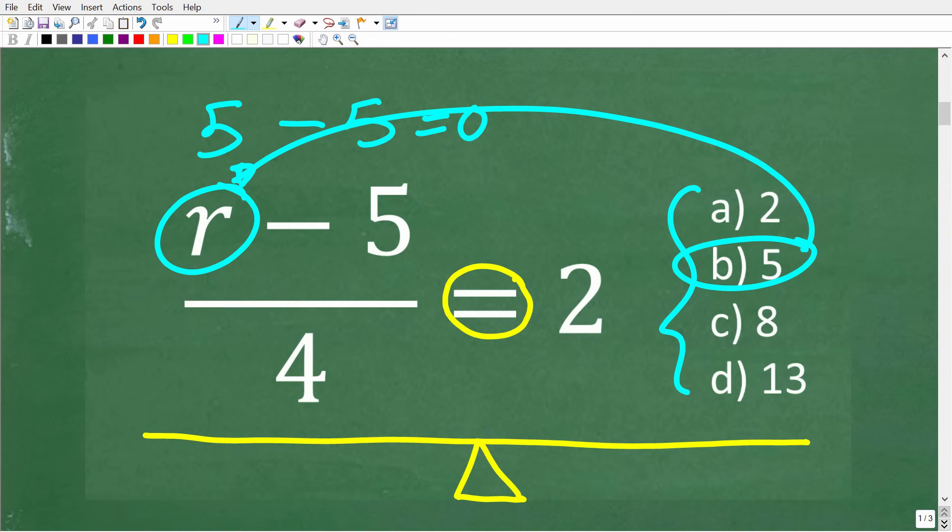which is 0. So now we have 0 over 4, which is 0. So this makes the left hand side of the equation 0, which is not equal to 2. So if we kind of run through these choices, eventually we see that 13 is the right answer.